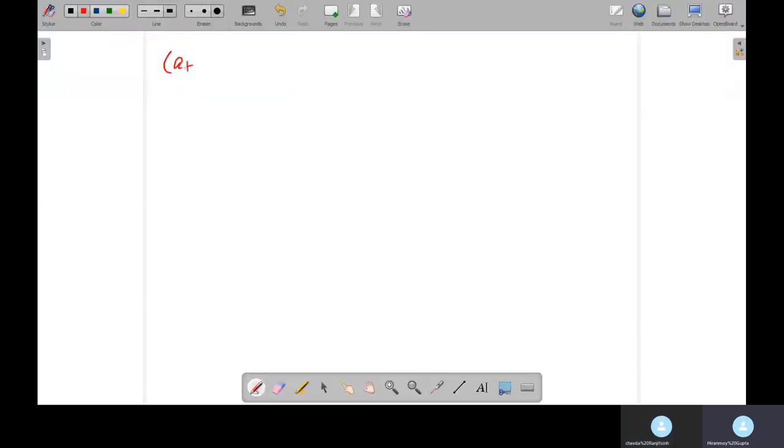Write something A plus B whole square. What is it? A plus B times A plus B, right?